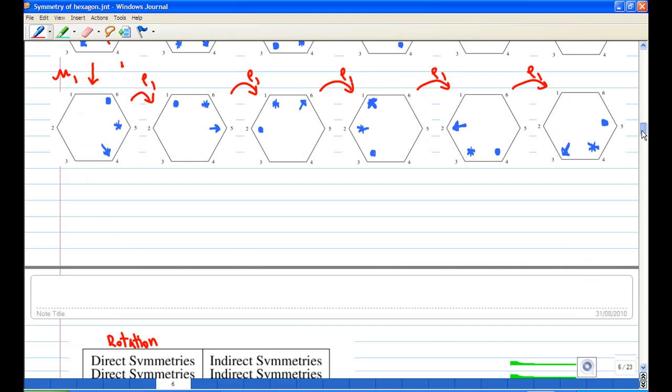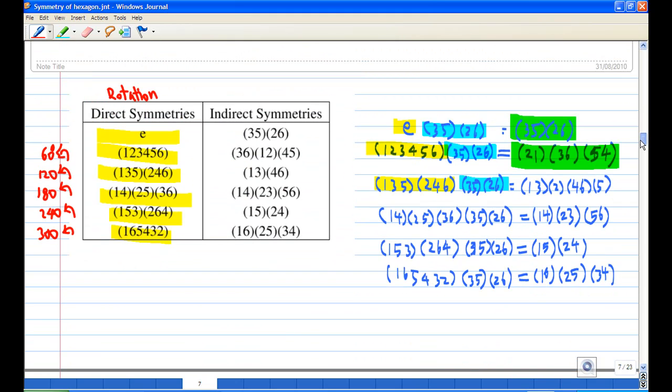Now to write down all these 12 in cycle form, one fast way is to write down all the rotations first. So I have one rotation e (rotation of zero degrees) and rotation 60 degrees: (1 2 3 4 5 6). Rotation 120 degrees is actually the square of rotation 60 degrees, so you just multiply. That's how you get all the six rotations. Then just pick one indirect symmetry, meaning one reflection. I have one reflection, which is μ. In order to get all the others, what you do is take all the direct symmetries, all the rotations, and multiply by μ.